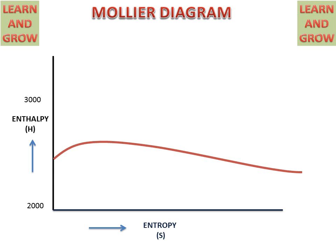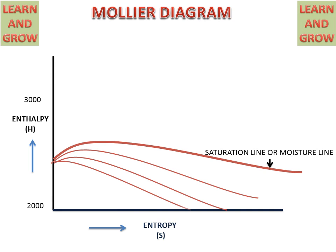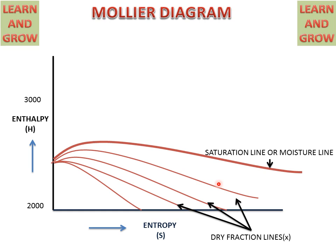The diagram has a saturation line. Below the saturation line there are dryness fraction lines, because below it we have moist steam or wet steam, and above the saturation line we have dry steam or superheated steam. These lines show the dryness fraction of the steam — how dry or how wet it is.